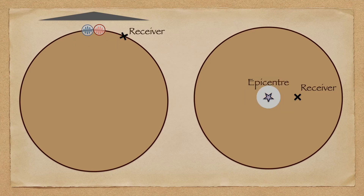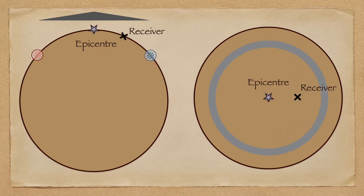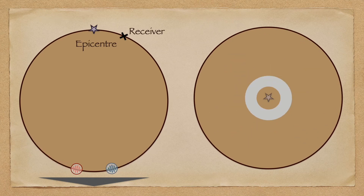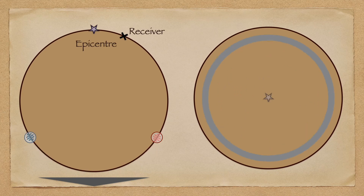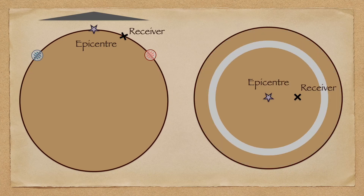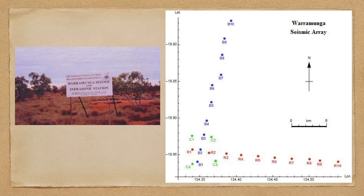From there, the waves keep propagating and return to the epicenter. Shortly after, the blue wave returns to the receiver and is registered as R3. Both waves then continue their journey, retracing their steps on their first circuit, passing into the antipodal hemisphere and converging on the antipode of the epicenter once more, before radiating outward and starting back towards the epicenter. The red wave again converges on the receiver from the opposite direction and is registered as R4. By this stage, the waves have lost a lot of energy and are becoming indistinguishable from background noise.